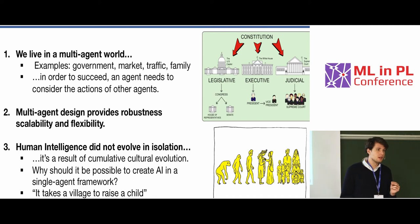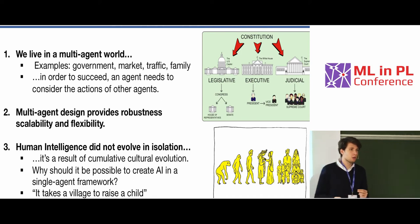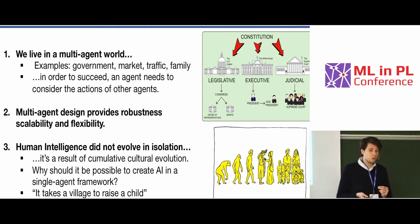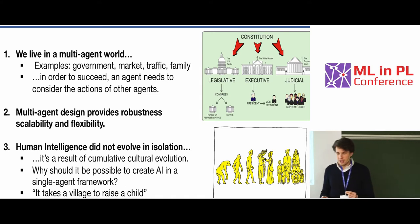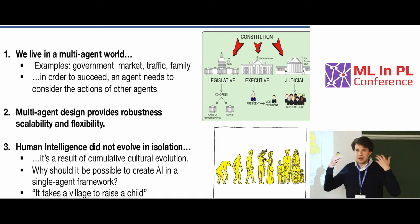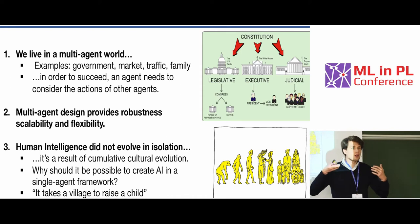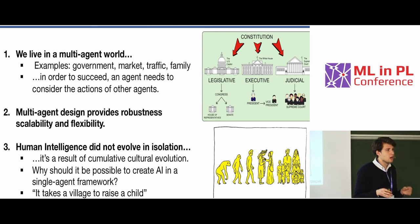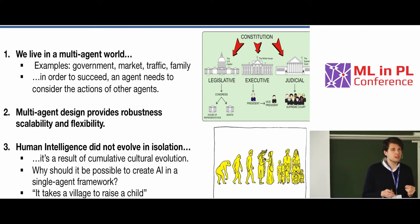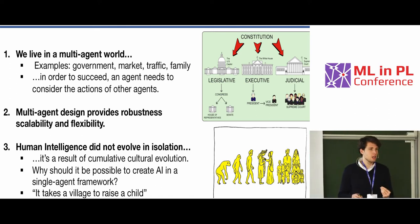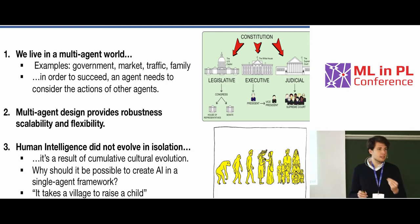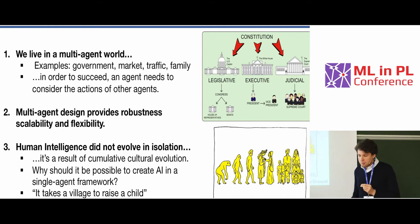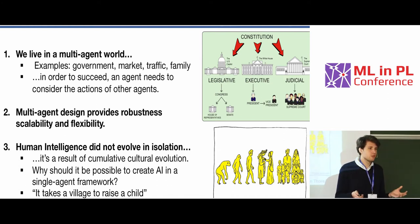This is something we know already but don't usually realize. We like to think of intelligence as something which simply arose from our minds, a product of our thoughts alone, something we were born with thousands of years ago and just stayed the same. But the truth is that it is a result of cumulative cultural evolution — it took thousands of years and it's still taking shape. If that's the case, why should it even be possible to create more general AI in a single-agent framework?